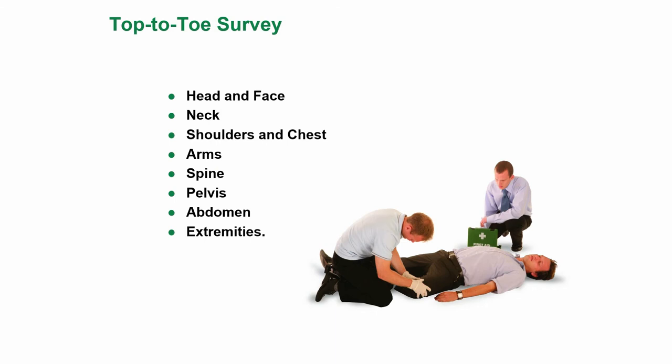This is where you do the top-to-toe survey. You start with the head and the face, then the neck, the shoulders and chest, the arms, the spine, the pelvis, the abdomen, and the extremities. You're looking for anything that shouldn't be there — perhaps a bruise, perhaps a contusion, any lumps, any bumps, anything that wouldn't normally be on the casualty. This is why you check top to toe.